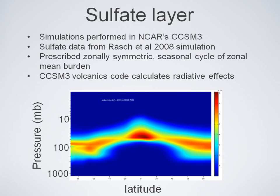To do this, I ran a global climate model — NCAR's CCSM3. To simulate stratospheric sulfate aerosols, I prescribed a burden of sulfate. This data I got from a study by Rash et al. in 2008, from a simulation where they injected sulfur dioxide and let it interact with the stratosphere. The CCSM3 treats it as volcanic aerosol. The layer is shown in a latitude-by-pressure plot, with a concentration maximum at the injection site from Phil Rash's simulation. These sulfates reflect shortwave radiation, letting less energy into the atmosphere and cooling the planet.